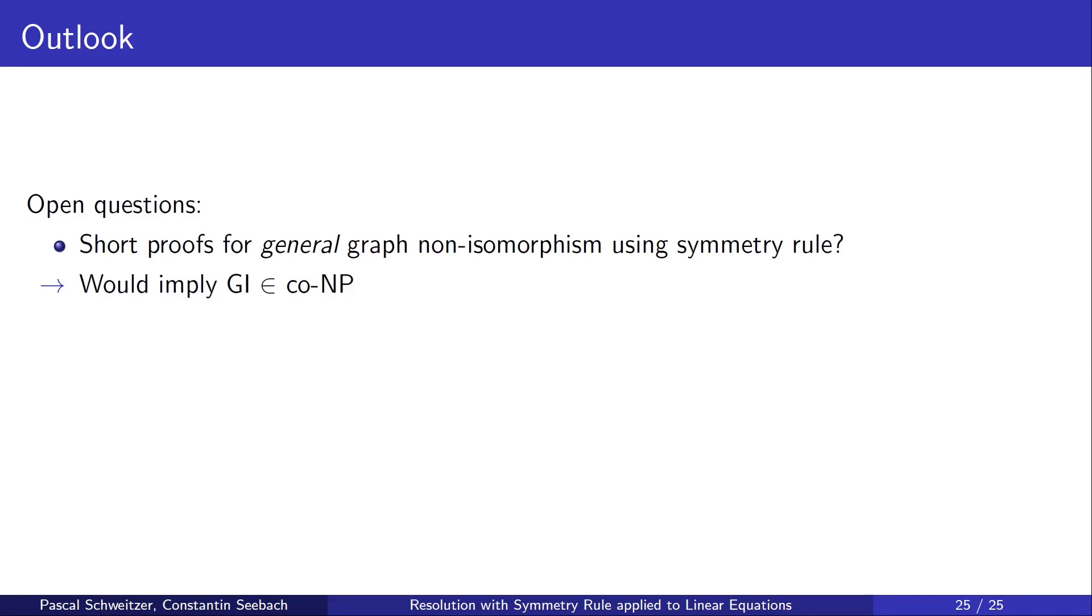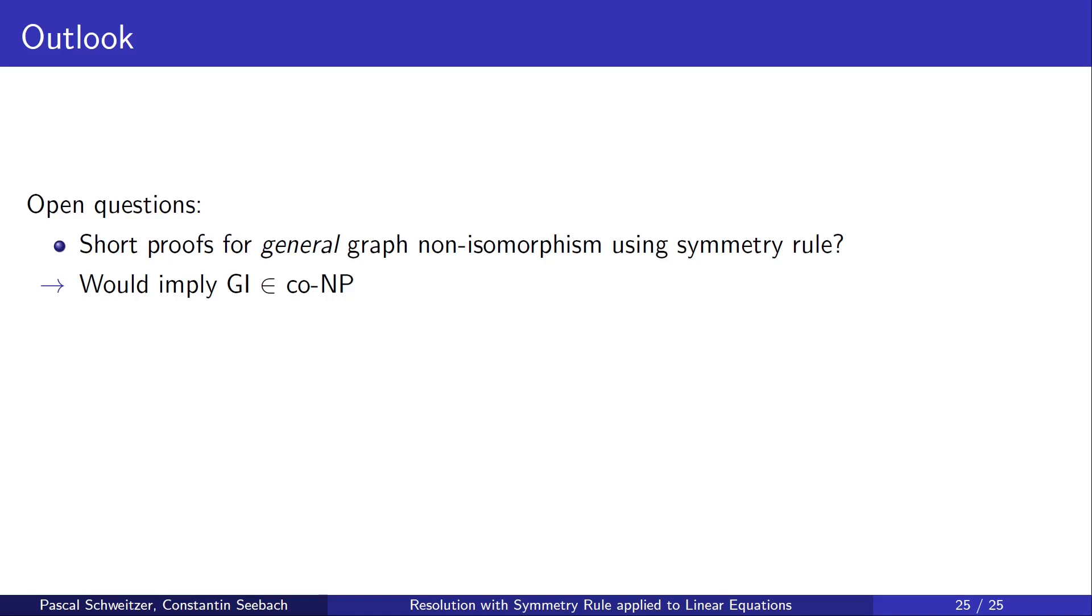There are still some interesting open questions. Firstly, are there short proofs for general graph non-isomorphism using the symmetry rule? If that were true, it would imply that graph isomorphism is in co-NP. Also, how powerful is the dynamic symmetry rule? No lower bound is known and no equivalent proof system is known. I hope you enjoyed my little talk and thank you for watching.